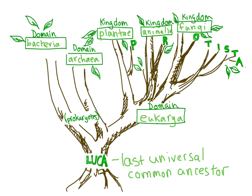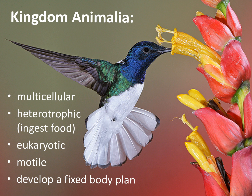On to an inconspicuous little kingdom — Animalia — where we belong. Defining animals is a tricky business because they have so many characteristics, yet there are some that they all share. Like this hummingbird, they are all multicellular. They are all heterotrophic, and they ingest their food — just like you can see this hummingbird sticking its beak into this flower to ingest some nectar.